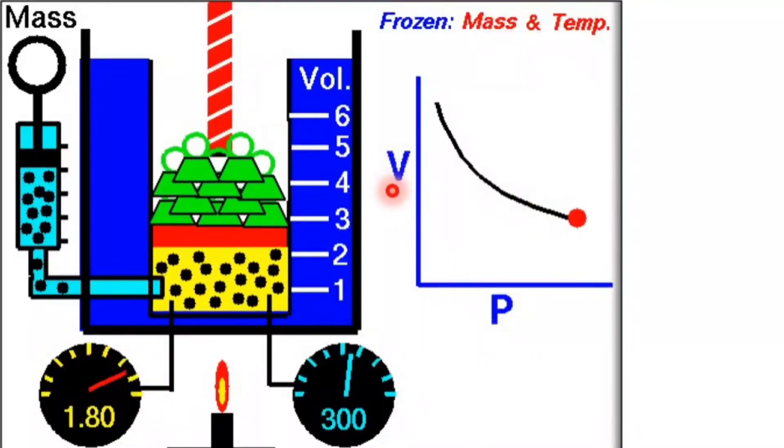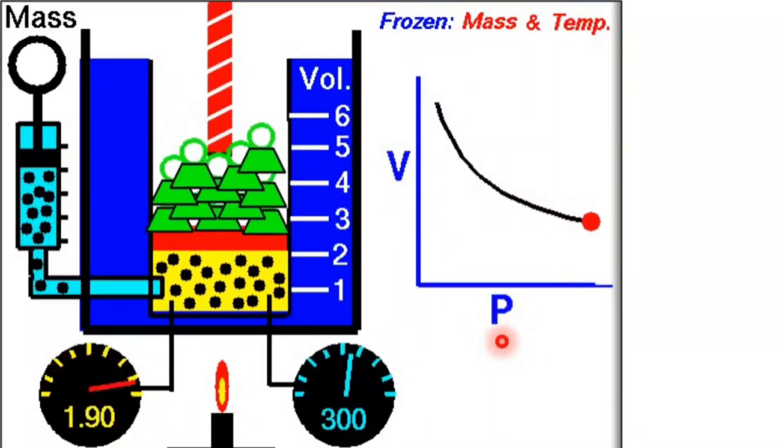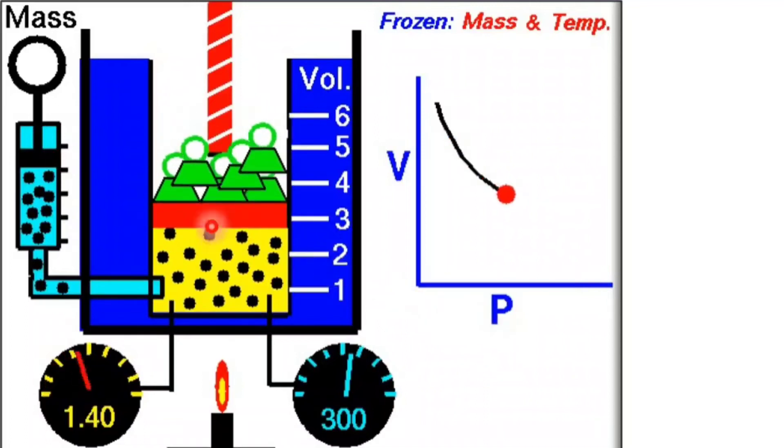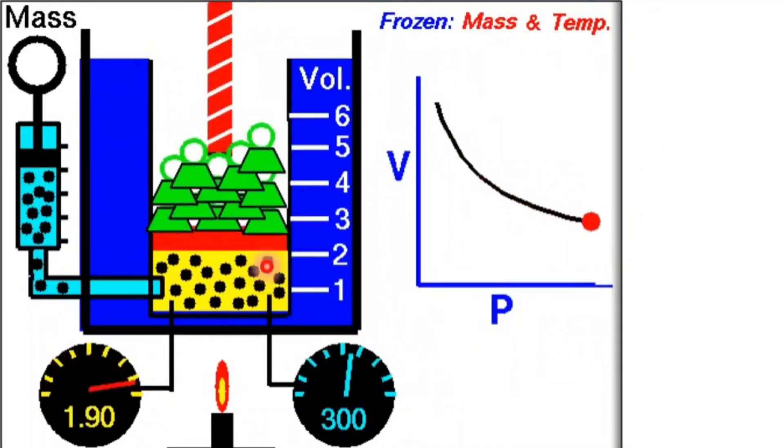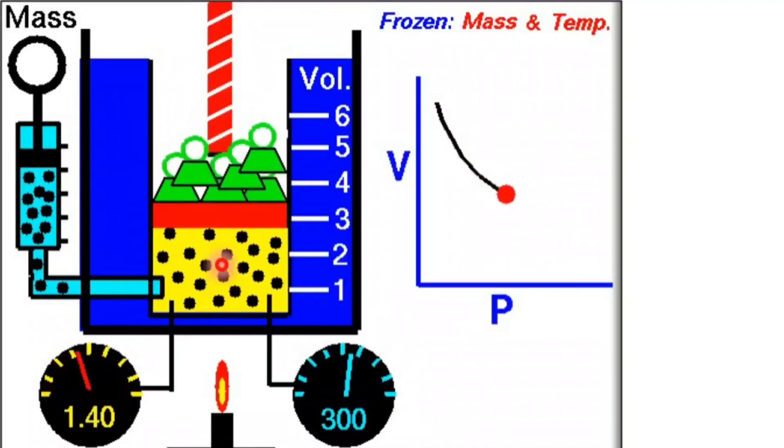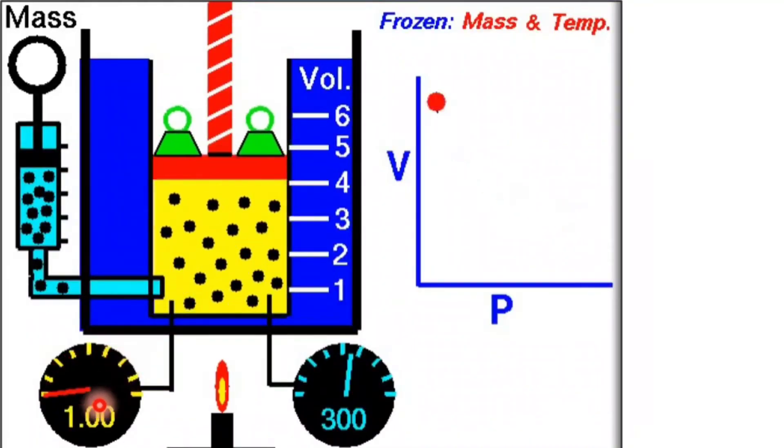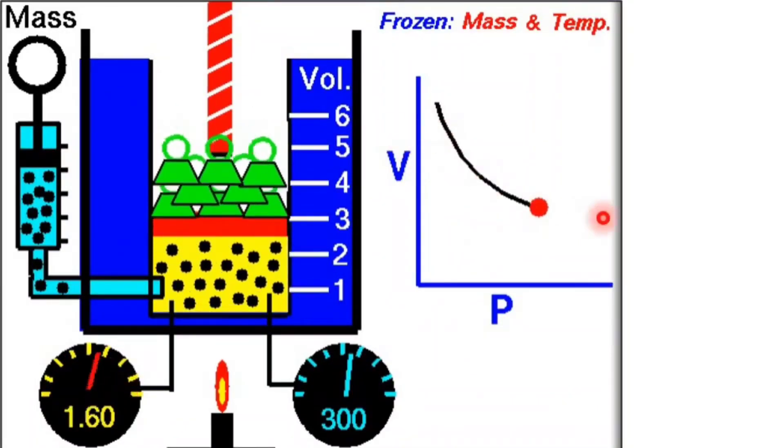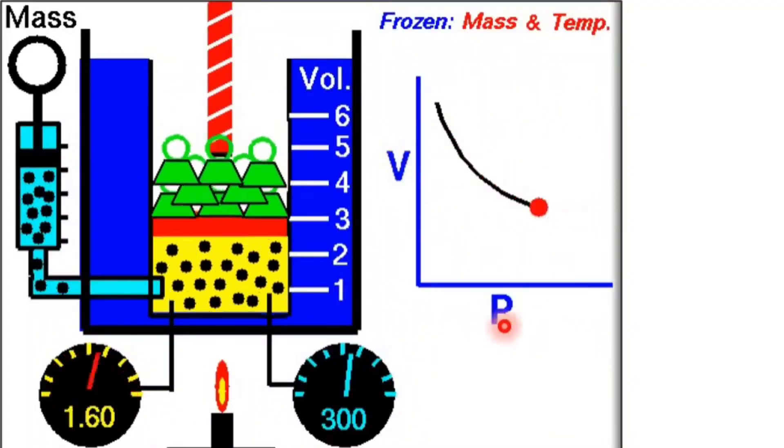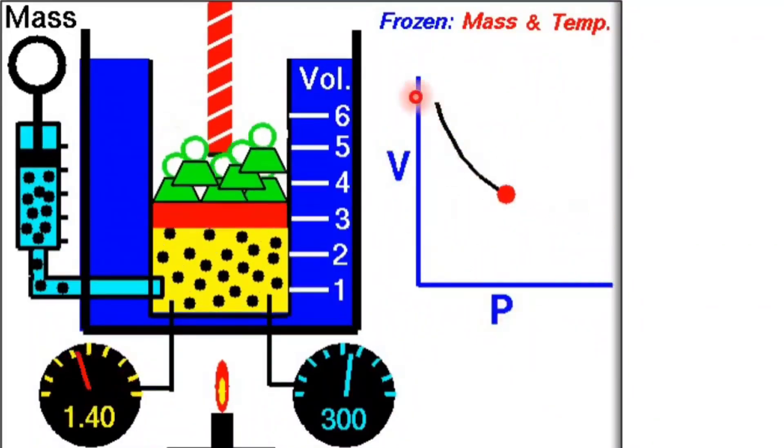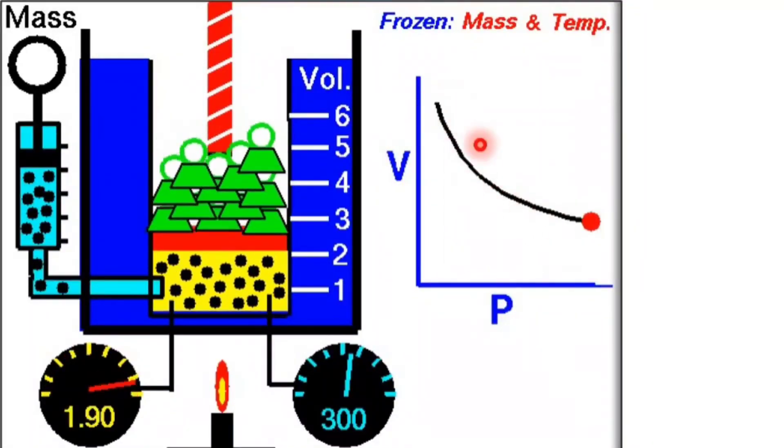But here you can see the volume varies according to the pressure. And in this figure also you can see the volume is changed and so that pressure. And the graph of this pressure versus volume is like a hyperbolic shape.